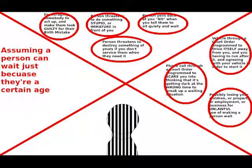By assuming a person can wait just because they're a certain age, you're just telling them that it's acceptable to act up and make them feel like they're responsible for the way they're born. It can even make them threaten to do something stupid or immature in front of you. Some people say, what if I do this when I wait? Or they could threaten to destroy something of yours if you don't service them when they need it. If you go telling them to sit quietly and wait when you know there's a problem and they can't, they will yell no at you.